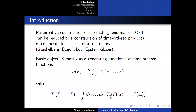Formally this is a very simple expression. The difficulty — similar to the problem discussed in the previous talk — is that these products are in many cases ill-defined. The reason is that these fields are operator-valued distributions, and you are allowed to multiply them with test functions. But time-ordering contains step functions, which introduces singularities, so the expression as stated is not meaningful.